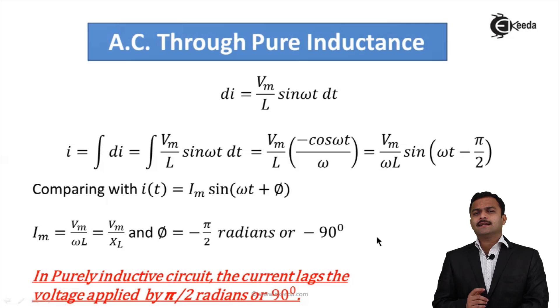So by considering voltage as a reference having phase angle 0, if I pass this voltage to a pure inductor, I will get a current passing through it having a phase angle minus 90°. So the conclusion is, in purely inductive circuit, the current lags the voltage applied by π/2 radians or 90°.